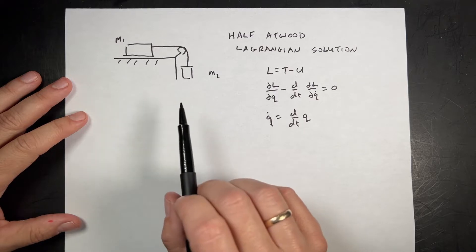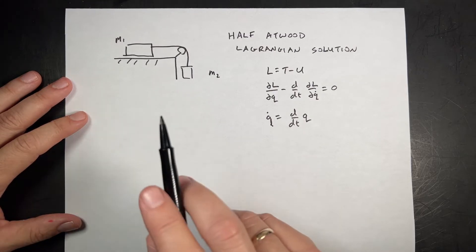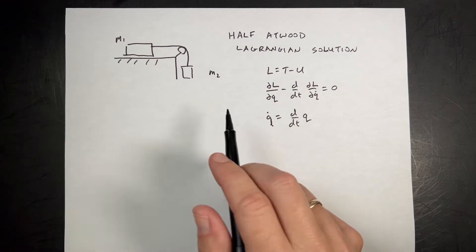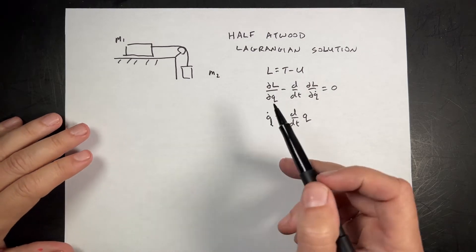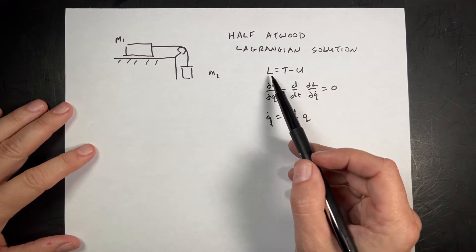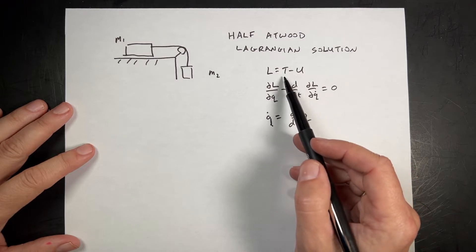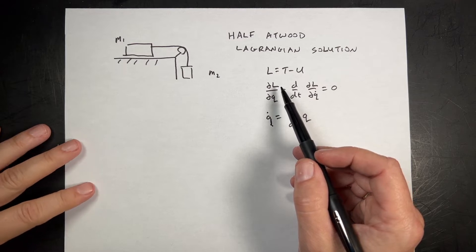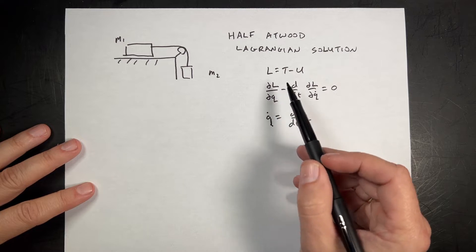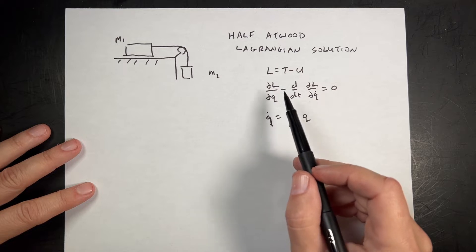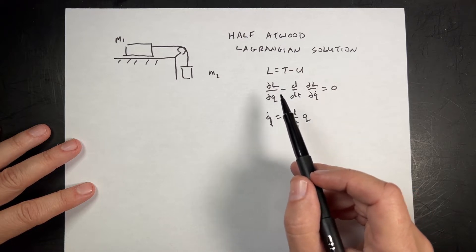In Lagrangian mechanics, number one, you need to pick some coordinates to describe the system. They're generically called Q instead of X, Y, and Z. With that, we determine the Lagrangian, which is the kinetic energy minus the potential energy. And then the trajectory of the system has to follow the Euler-Lagrange equation, which says that the integral of L over some time has to be minimized.